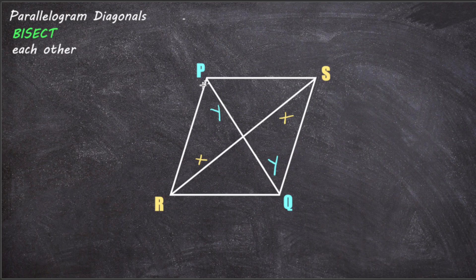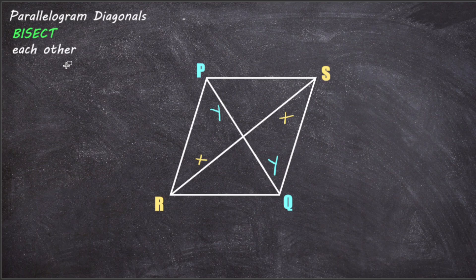So the diagonal PQ bisects the diagonal RS, and the diagonal RS bisects the diagonal PQ — and that's how we know that the parallelogram diagonals bisect each other. Thanks for watching!